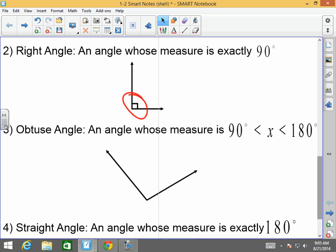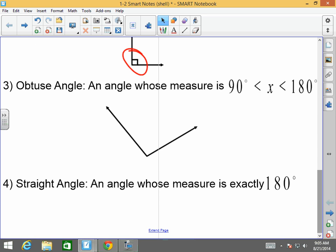And a straight angle is an angle whose measure is exactly 180. A straight angle, as I'm sure you have seen before in the past, is simply just a straight line. A straight angle is just a straight line. There's nothing fancy about it. That's a straight angle.